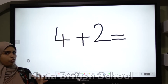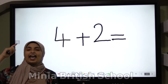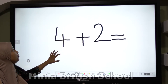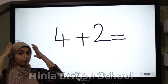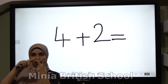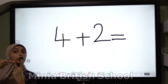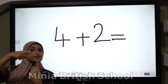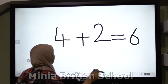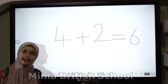All of you read with me: four plus two equals. So who can tell me what is the big number - four or two? Yes, four - excellent KG! Where will we put the big number - in my hand or in my mind? Excellent - in my mind! So we will put number four in my mind and the small number in my hand. What comes after four? Five, six - excellent KG! Four plus two equals six.